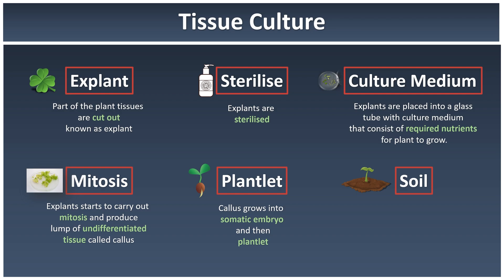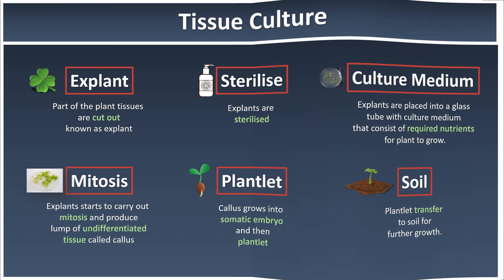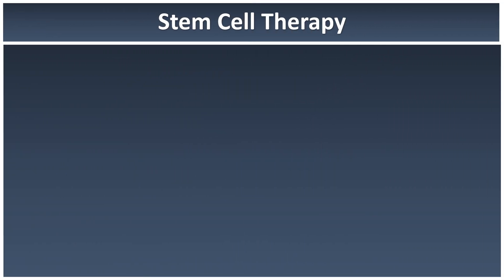When the cells grow into an embryo and eventually become a baby plant, we call it a plantlet, which is then transferred to soil for further growth. You can apply tissue culture to any plant you like — not just the money plant, but even durian varieties like D24 or Musang King. For cultured meat, we simply replace the plant tissue with muscle tissue or muscle cells from animals such as cow or lamb.